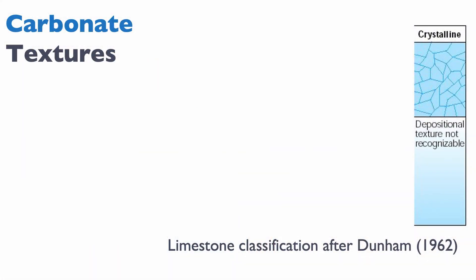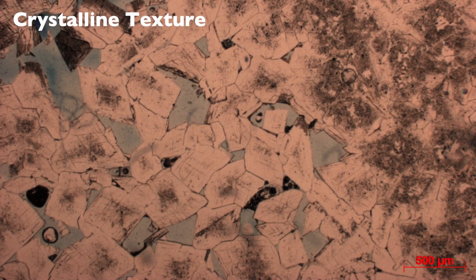Now, if you cannot distinguish the original texture, then you have a problem because you cannot apply the Dunham classification. In that case, you call this a crystalline rock. When you call a rock crystalline, you pretty much give up in terms of Dunham — you cannot reconstruct its environment of deposition. That's a problem because the environment of deposition is at the base of all we do in sequence stratigraphy or sedimentology. Here's a beautiful example: this is a dolomite, and you can see that the original texture of the limestone is completely lost. We're left with large crystals of dolomite but no original texture, so we cannot apply a Dunham texture other than to say this is a crystalline texture.